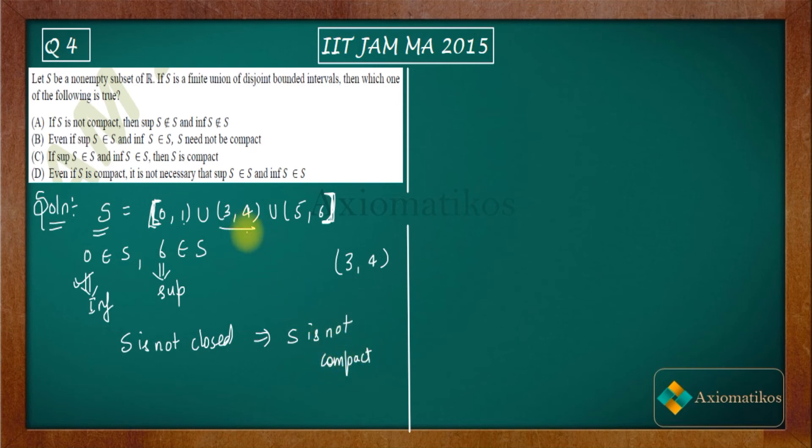It is very easy to see from here that your option B is correct. It says even if supremum and infimum belong, then also it need not be compact. We proved that S is not compact, so that means option B is true. It need not be compact even if supremum and infimum belong to S.